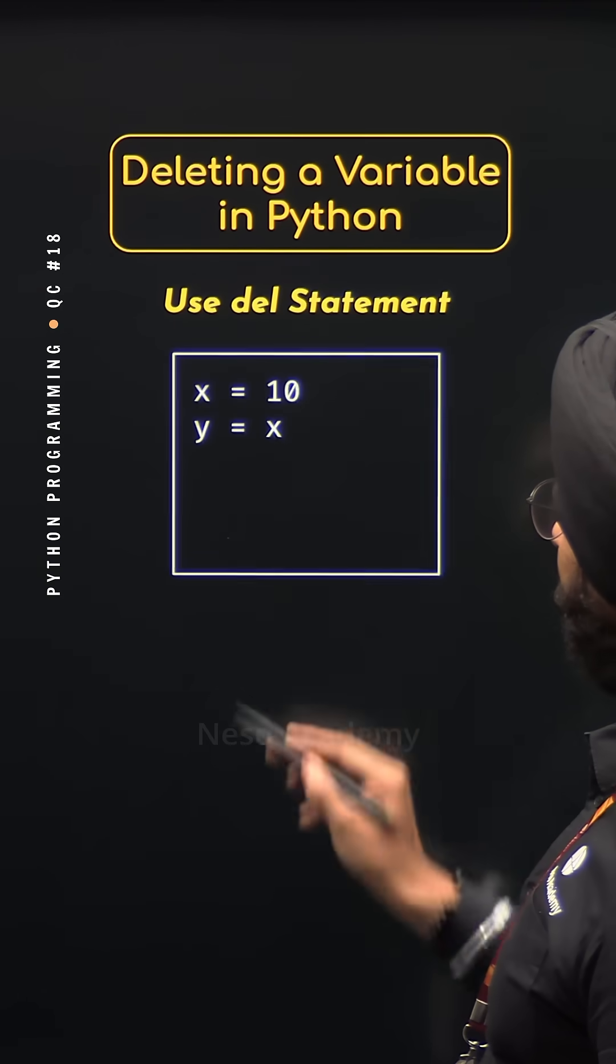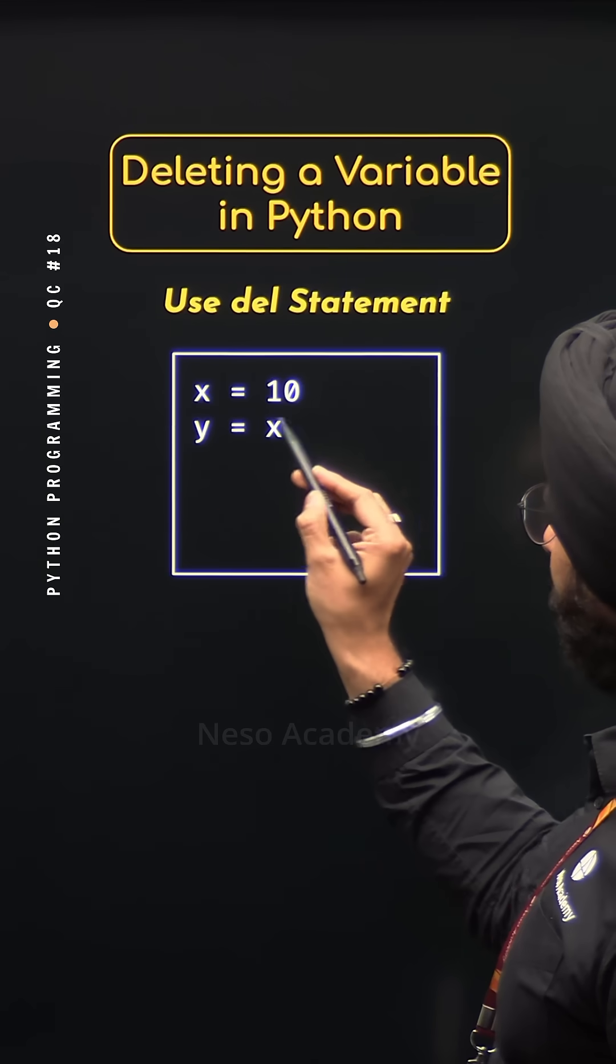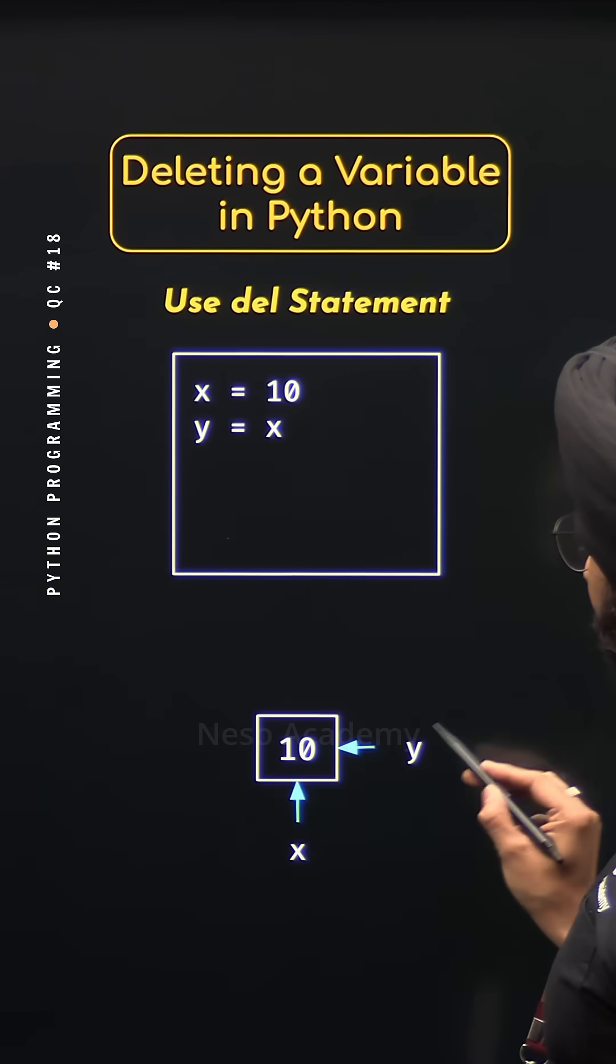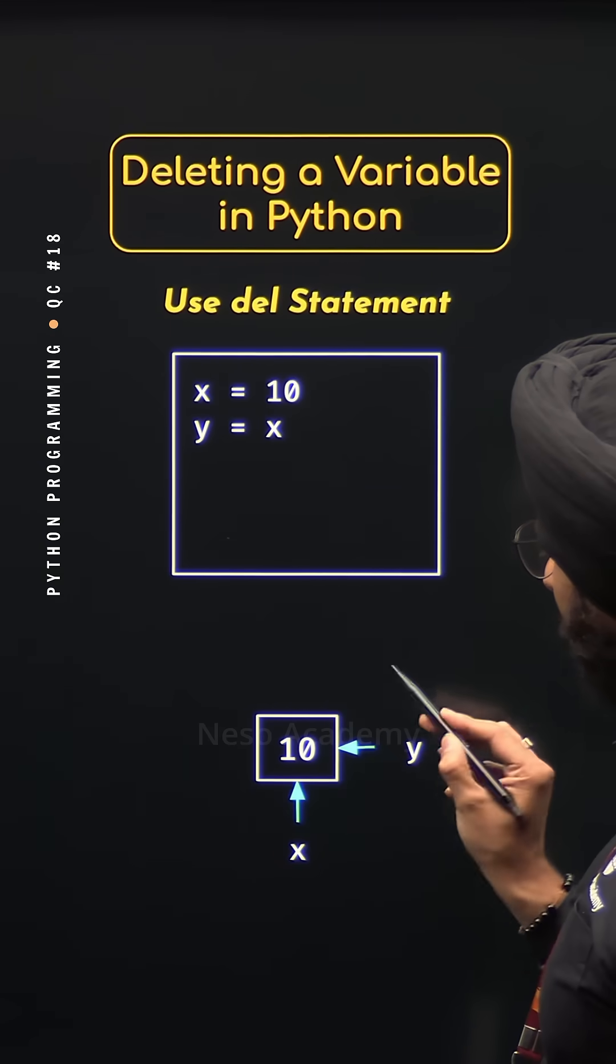For example, x is pointing to value 10 and x is assigned to y. This means both x and y are pointing to the same value 10.